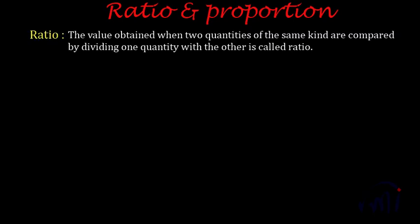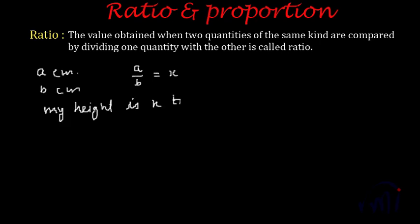Ratio is the comparison of two quantities of the same kind. To compare two values, we divide one by the other and tell how many times the first value is of the second. Ratio is defined as the value obtained when two quantities of the same kind are compared by dividing one quantity by the other. For example, if your height is 'a' centimeters and your sister's height is 'b' centimeters, we divide a by b and get x.